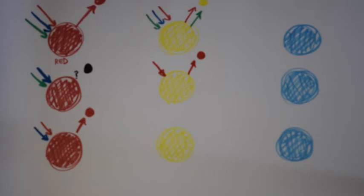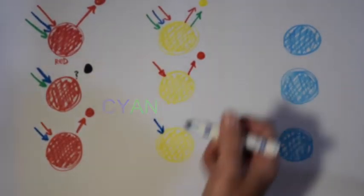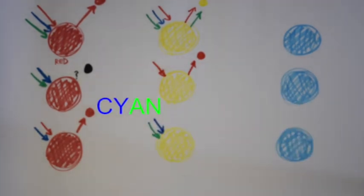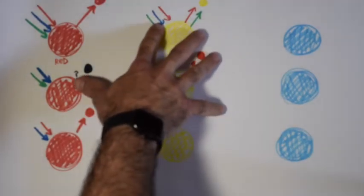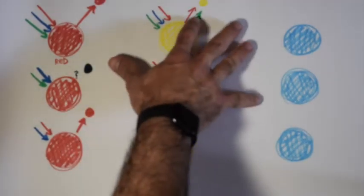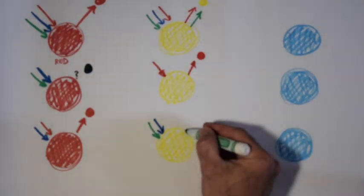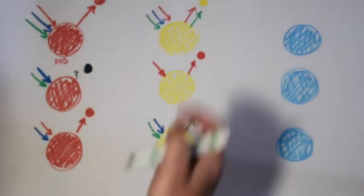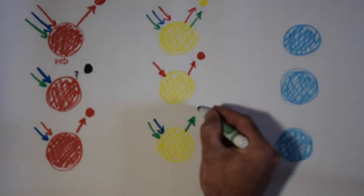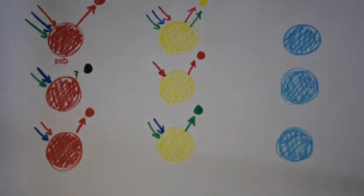What if we shine cyan light on this yellow surface? Cyan light is a combination of blue and green. When white light — all colors — hit it, it reflected red and green. We don't have red, but we do have green, so it's going to do the same thing: reflect the green and absorb the blue. That means we're going to see this yellow surface as green. No longer yellow. Very interesting.